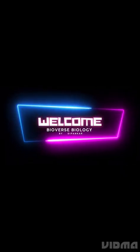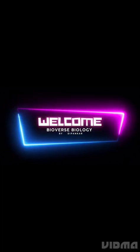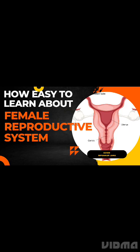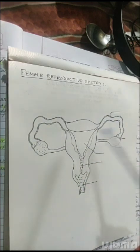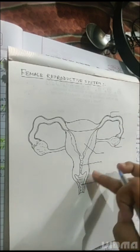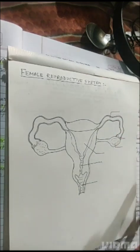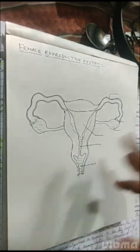Hello friends, this is Deepankar Janna, your guide and friend, and you are watching Bio Verse Biology. Good morning students. After the male reproductive organ — the testes — we are going forward to the female reproductive system. This is a basic structure of the female reproductive system, which has six parts or sections. We are discussing them one by one from the lower part so you can easily remember.